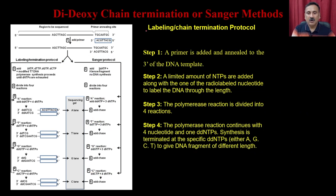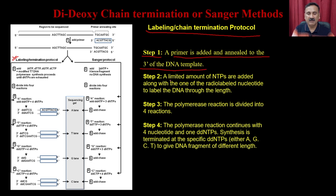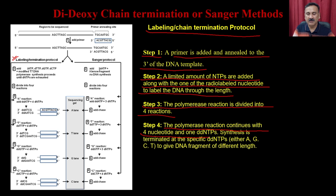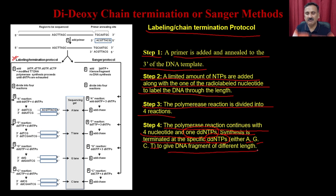In the labeling and chain termination protocol: in step 1, a primer is added and annealed to the 3' end of the DNA template. In step 2, a limited amount of NTPs are added along with one radiolabeled nucleotide to label the DNA throughout its length. In step 3, the polymerase reaction is divided into four reactions as discussed. The polymerase reaction continues with four nucleotides, and one of them would be the dideoxy NTP. Synthesis is terminated at the specific ddNTP — either A, G, C, or T — to give DNA fragments of different length.